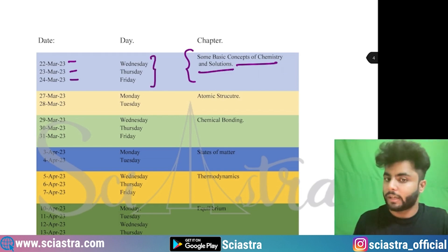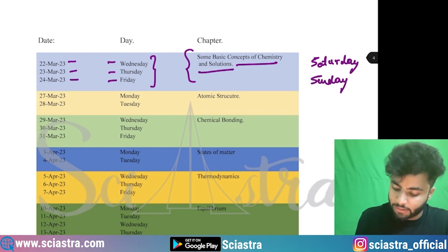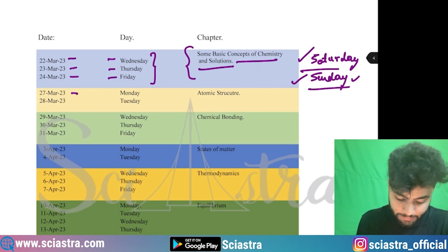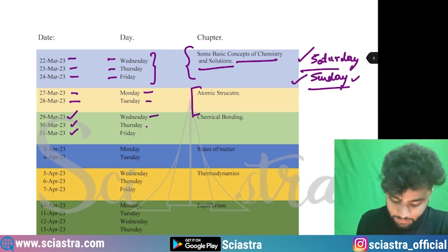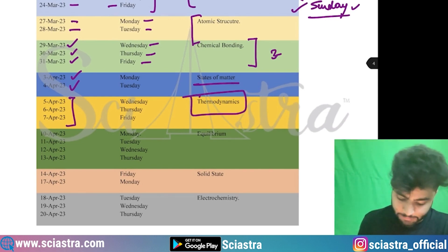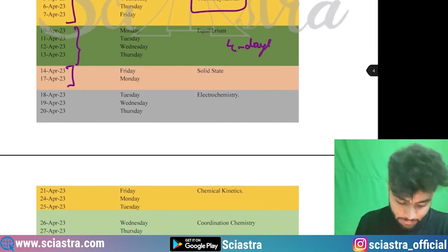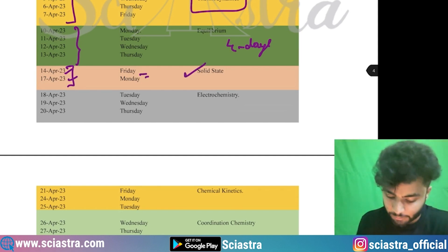On Saturday and Sunday, you must practice previous year papers or mock tests. On 27th and 28th — Monday and Tuesday — study atomic structure. On 29th, 30th, 31st — Wednesday, Thursday, Friday — study chemical bonding for three days. Then 3rd and 4th April, states of matter; 5th to 7th April, thermodynamics; 10th to 13th — four days — equilibrium, as it is a big chapter. Then 14th to 16th, solid state for about two days.